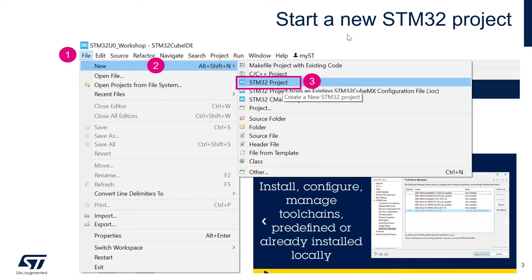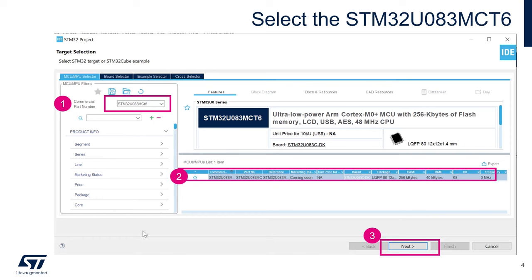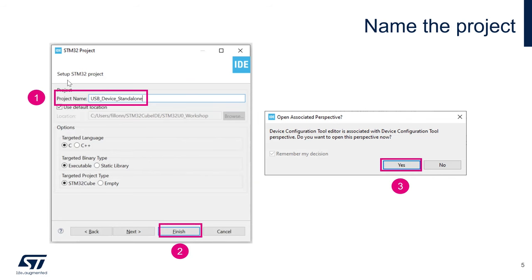To start a new project in CubeIDE: go to File > New > STM32 Project. Enter 'STM32U083MCT6' — the microcontroller on your discovery kit — select it, press Next, then give a name to your project, for example 'usb_device_standalone', and click Finish.